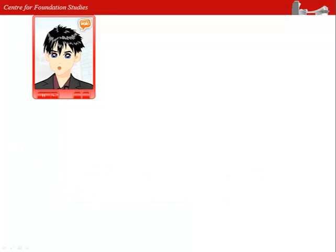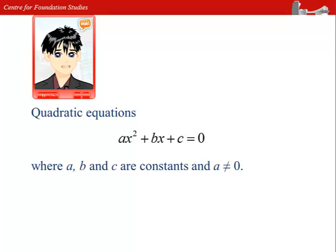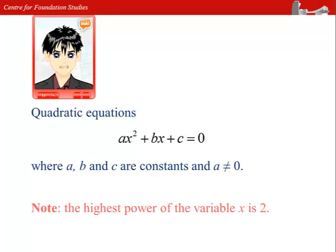Quadratic equations are usually written in the form of ax² plus bx plus c equals to 0, where a, b, and c are constants, and the value of a is not 0. Note that the highest power of x in the equation is 2.